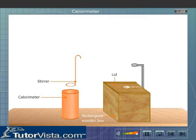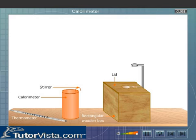The stirrer is used to mix the contents. The thermometer is used to measure the initial and final temperatures of the contents.